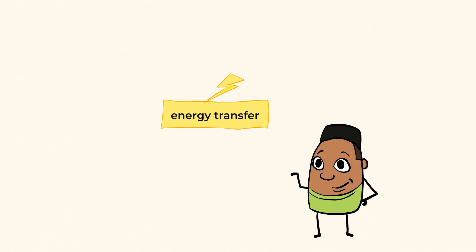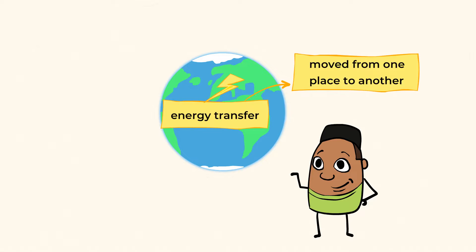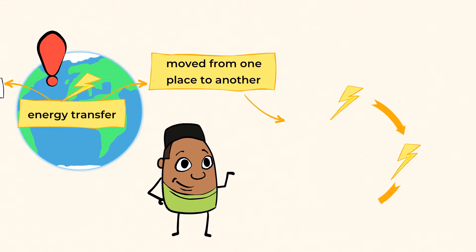Energy transfer? That means that energy is moved from one place to another. And this process is happening all around us all the time. Here's an interesting fact for you. Energy can't be made. It's just transferred from one thing to another over and over again.